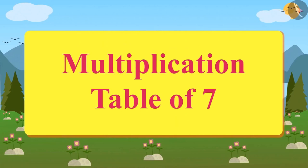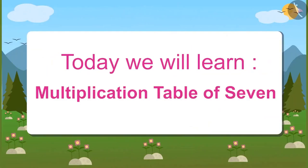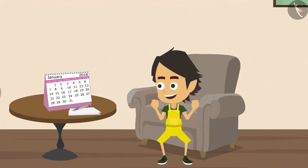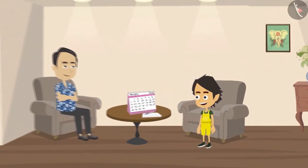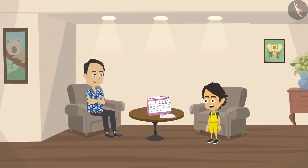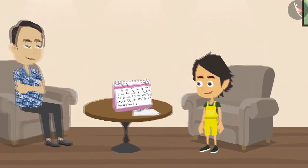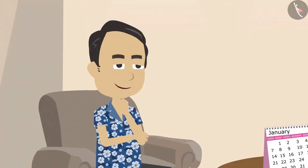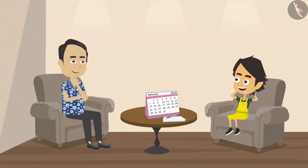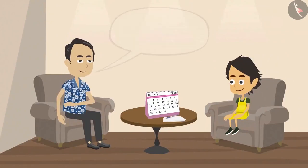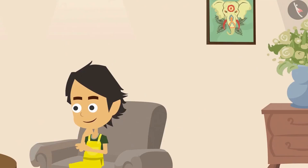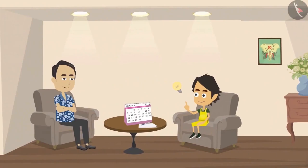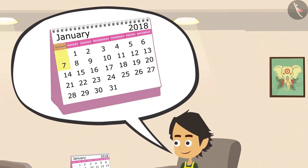Multiplication Table of 7. Today we will learn the multiplication table of 7. Today is Sunday and Ayushman is very happy because every Sunday he goes for an outing with his parents. Papa and Ayushman are ready to go out and are waiting for mummy. By the time mummy gets ready, Papa thinks of teaching something new to Ayushman. He asks Ayushman, what is the date today?